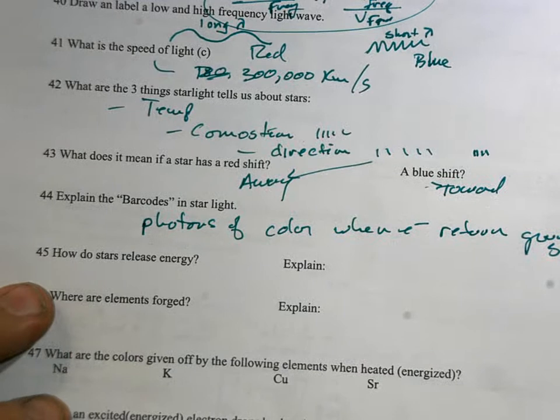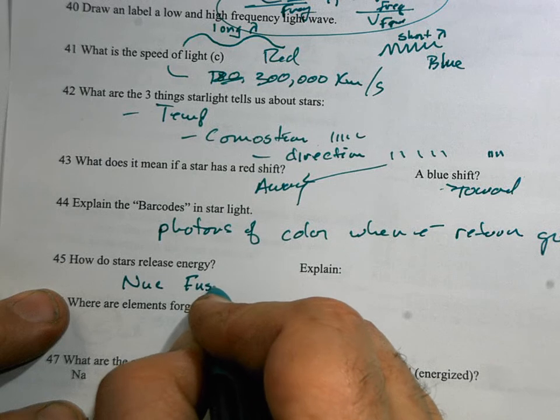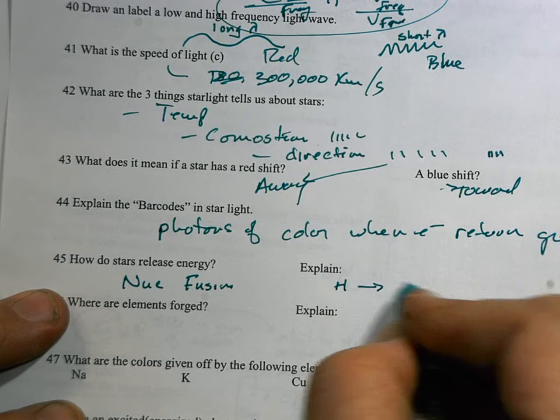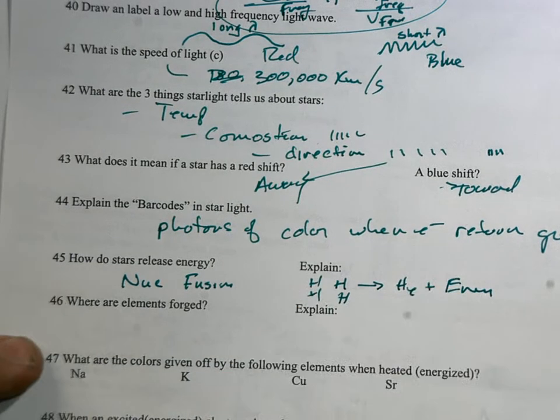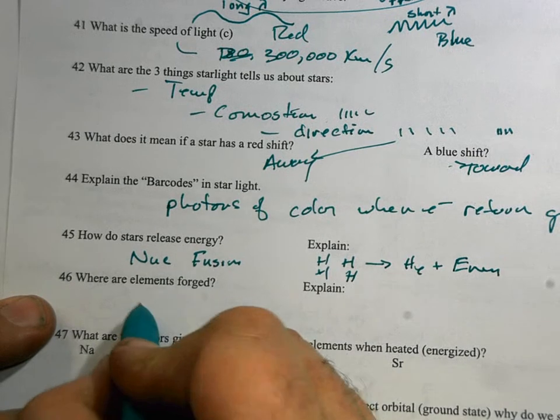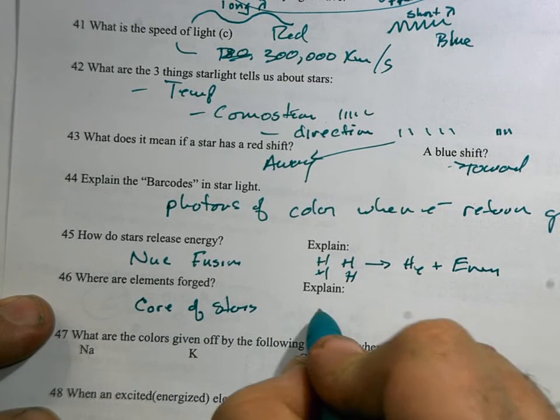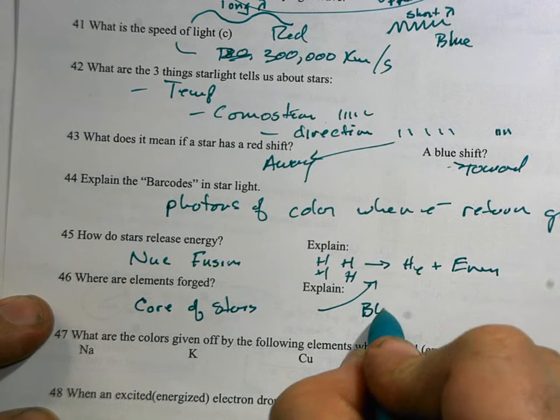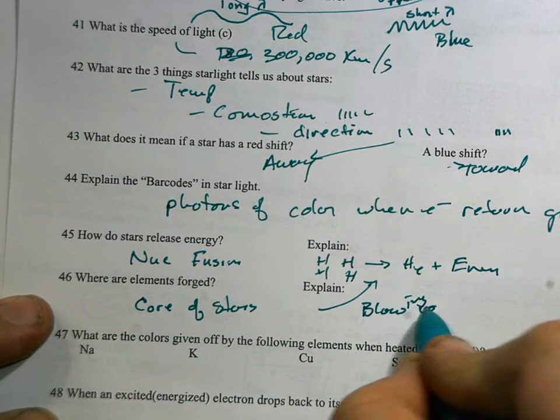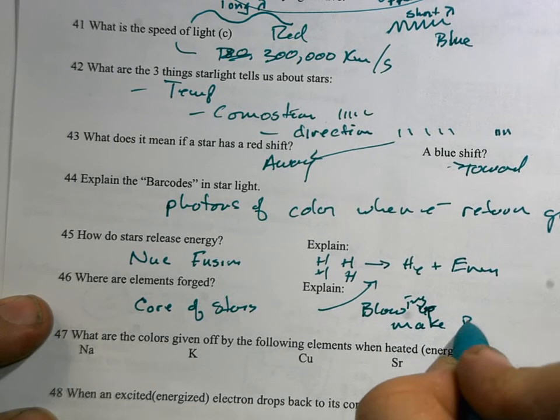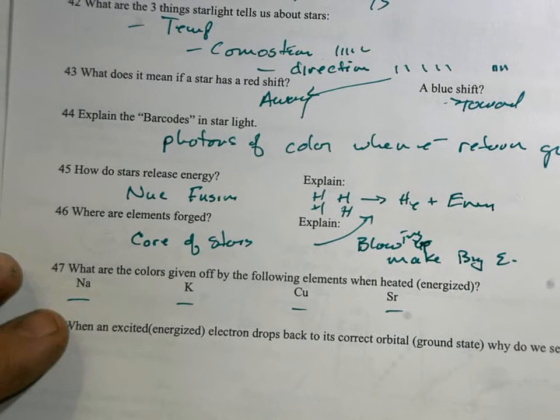How do stars release energy? Nuclear fusion. And that's hydrogens changing into helium plus a lot of energy. And I should put more hydrogens over here. And where are elements forged? They're forged in the cores of stars. And part of what we have, you've got fusion right here. And when the stars blow up or go nova, then you get blowing up stars. Blowing up makes big elements. And you can just look on your chart. I don't remember the colors. We did this. We're not going to ask you those on the test.